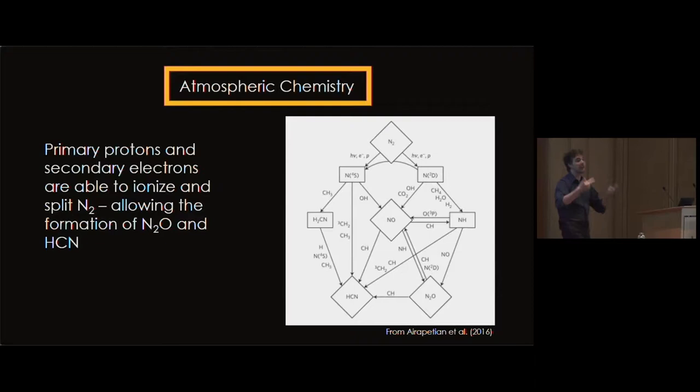These high energy protons are able to make it into the atmosphere, ionize the neutral gas around them, and then the subsequent secondary electrons have the correct cross-sections and energies to split N2. Once you split N2, it can stick to other things like hydrogen—it's very reactive—and you end up getting N2O or HCN, usually not both. That depends on your background atmosphere.